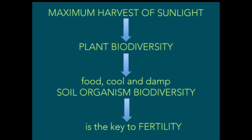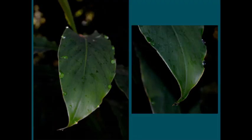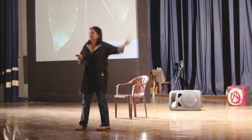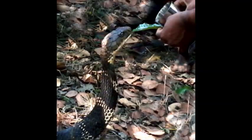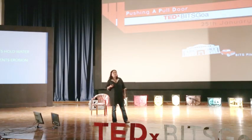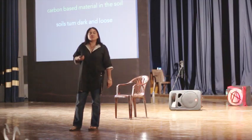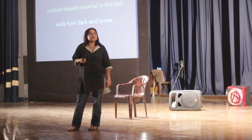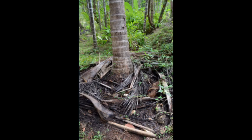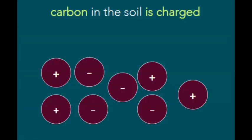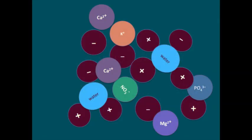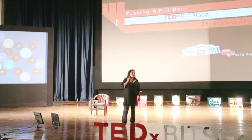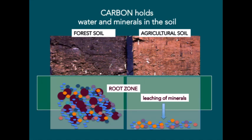How does the forest get water when it's not raining? Our forest here doesn't rain for six months. Every surface area in the morning has condensate on it because of the huge surface area created by harvesting sunlight — this provides irrigation every morning for bees and snakes. The roots hold water and prevent erosion. Rotting life gives carbonaceous material — good, loose, black soil. Carbon in the soil is charged, water is charged, soluble minerals are charged, so the forest soil holds water because of its carbon content.